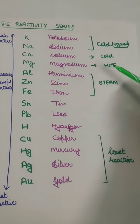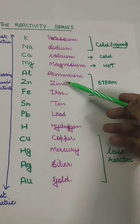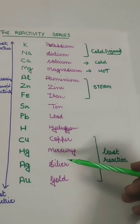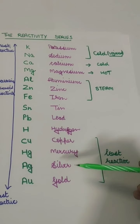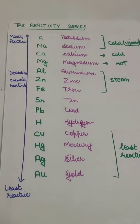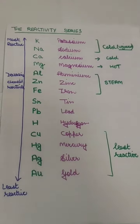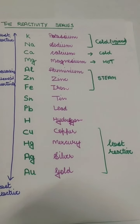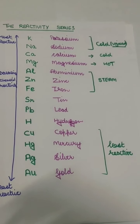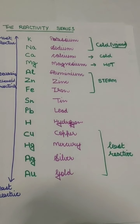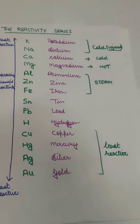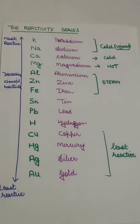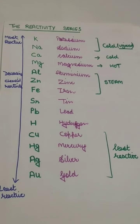Magnesium reacts with hot water. Aluminium, zinc and iron react with steam. Hydrogen, copper, mercury — these are the least reactive elements, so they don't react with water. This will also be useful when we study displacement reactions and reactions of metals with acids. So you have to learn this reactivity series.